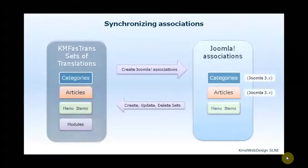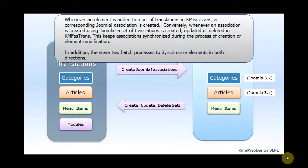Let's see how to use the Synchronizing Associations tool. Whenever an element is added to a set of translations in KM FastTrans, a corresponding Joomla association is created. Conversely, whenever an association is created using Joomla, a set of translations is created, updated, or deleted in KM FastTrans. This keeps associations synchronized during the process of creation or element modification.